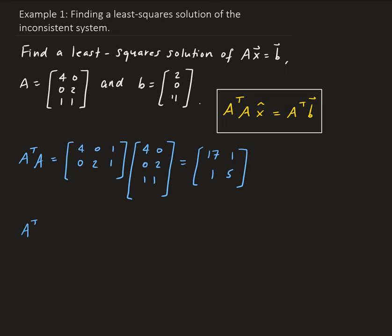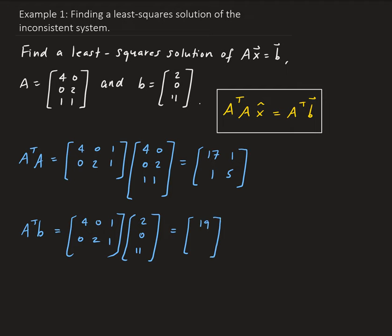Now we have to compute A transpose B. So we have 4, 0, 1, 0, 2, 1 times B, which is 2, 0, 1, 1. This is going to give us a 2 by 1 vector. So we have 4 times 2 is 8, plus 11, giving us 19. And then we have 0, plus 0, and then plus 11.